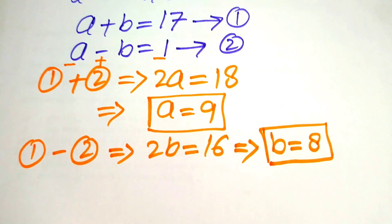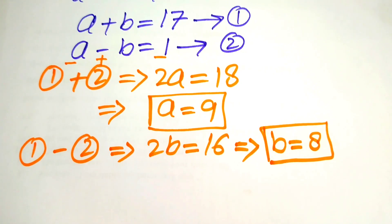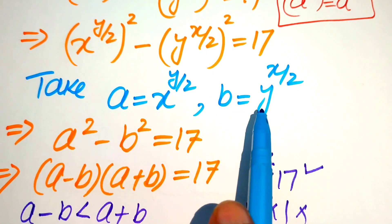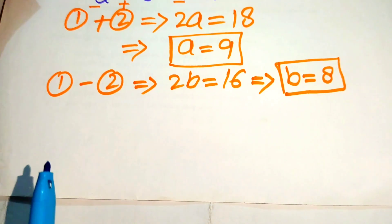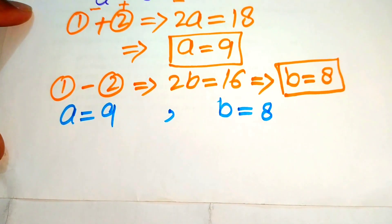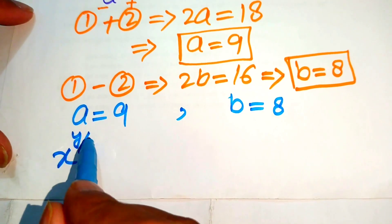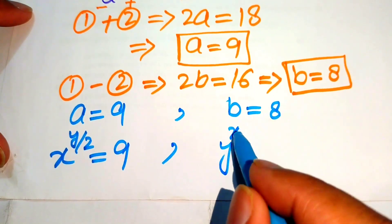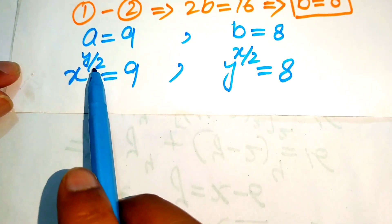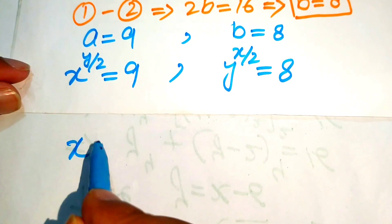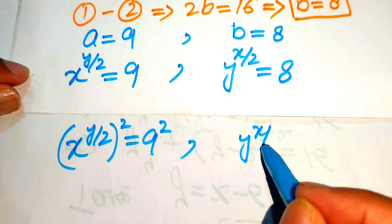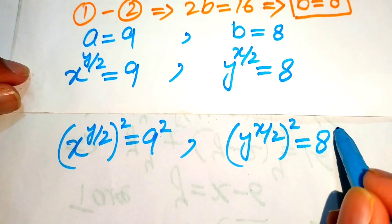Now we back substitute the values a equals 9 and b equals 8. We have x to the power of y over 2 equals 9, and y to the power of x over 2 equals 8. To remove the 1 over 2, we square both sides: x to the power of y over 2 whole squared equals 9 squared, and y to the power of x over 2 whole squared equals 8 squared.